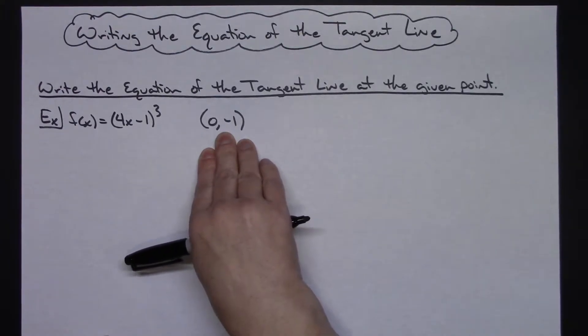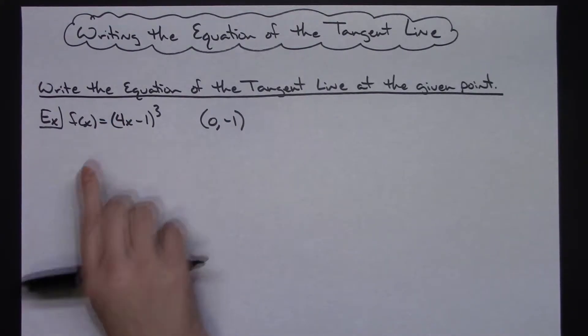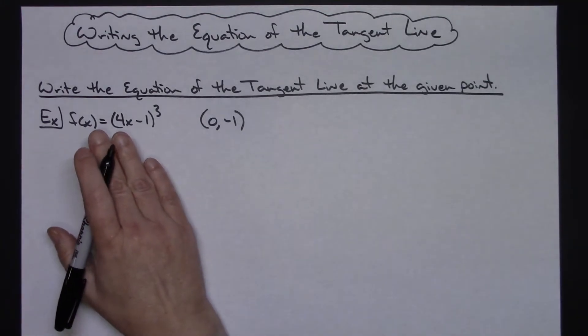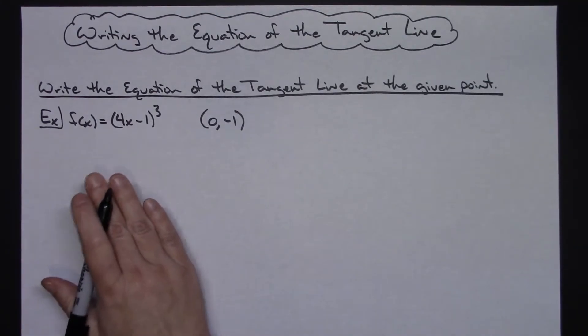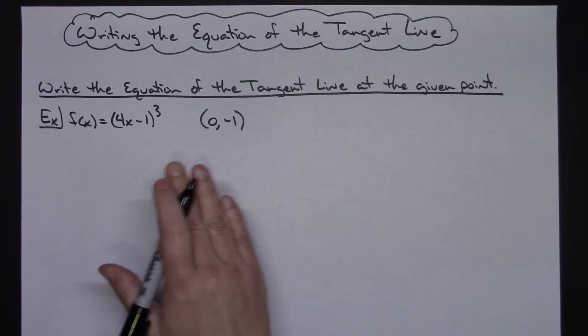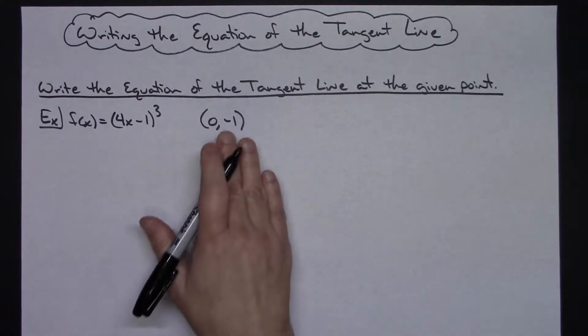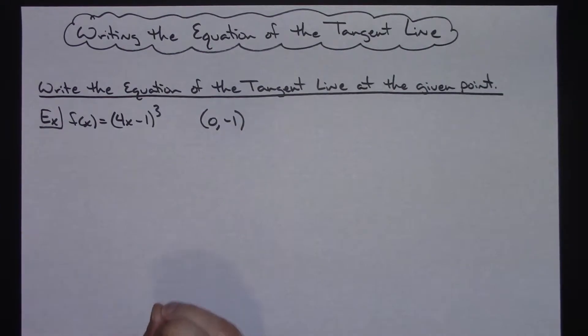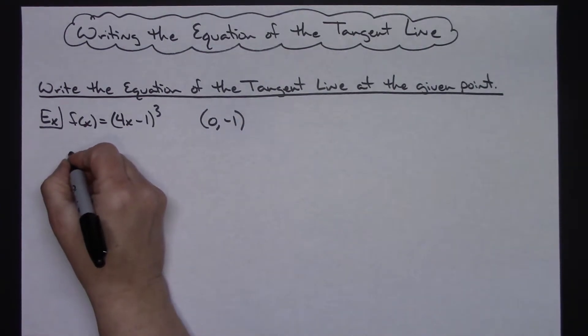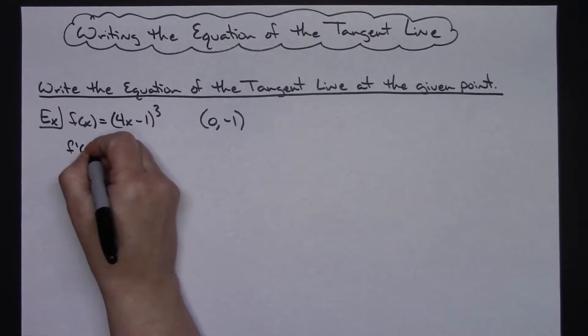So the first thing I'm going to need to do is find the derivative of this function, because once I find the derivative of this function that gives me the slope at any point along the curve. Then I can plug my given point in and find the specific slope at that point.